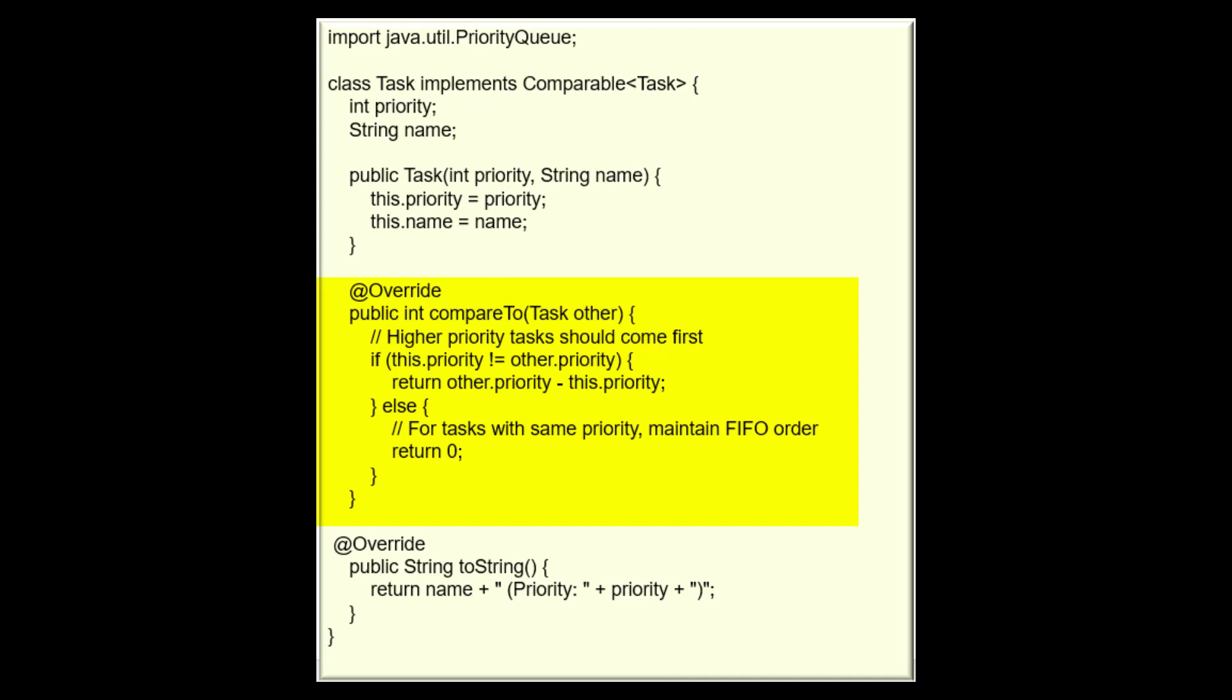So let's break it down. By the way, the @Override annotation that I have over there indicates that the method is overriding a method from a superclass or interface. In this case, it's overriding the compareTo method declared in the Comparable interface.